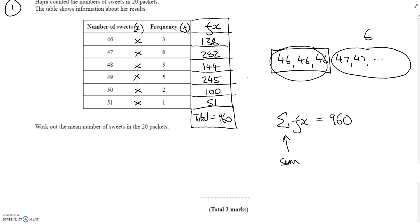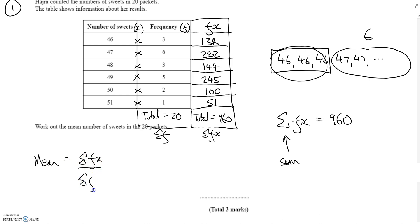The total frequency — the sum of f — is 20, because there are 20 packets. The mean is the sum of fx divided by the sum of f, so that's 960 divided by 20, which gives 48. So 48 is the mean number of sweets per packet. That makes sense — it's roughly in the middle. That's how we work out the mean: multiply along each row to find totals, then divide.